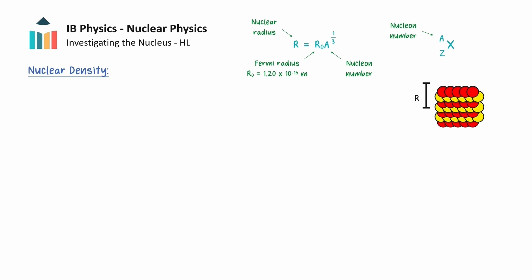This formula for nuclear radius has implications for nuclear density which we outline now. We can calculate the density of a nucleus by dividing its mass by its volume. For the mass, protons and neutrons have a very similar rest mass of 1u where u represents the atomic mass unit. Since the nucleon number represents the total number of protons and neutrons in the nucleus, the mass of a nucleus will be given by the nucleon number A multiplied by u.